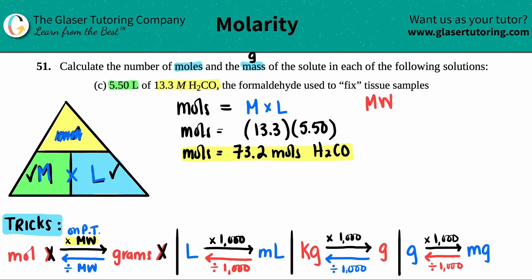Now we take a sidestep and find the molecular weight of H₂CO. Go to your periodic table and add up the masses. Make sure you have two hydrogens, one carbon — that's roughly 12 — and one oxygen. This comes out to roughly 30.026, and the units of molecular weight or molar mass are grams per mole.